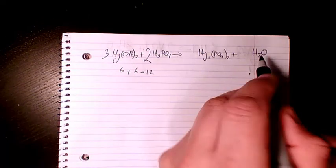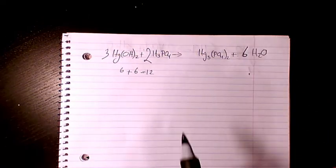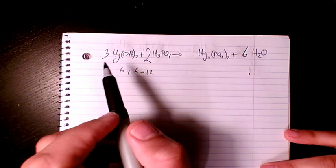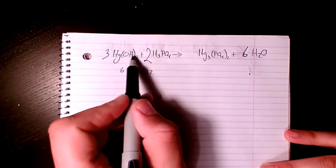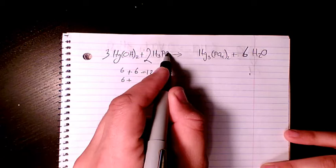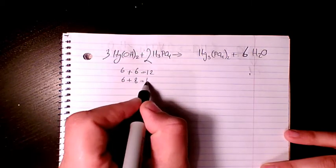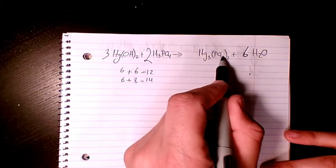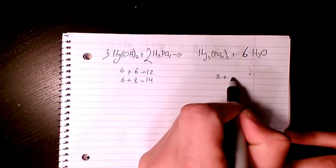And what about oxygen? Oxygen: two times three times two, six. Two times four, eight. So it's fourteen. And here we have four times two, eight, plus six.